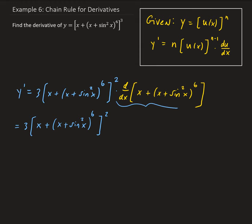So we need to take the derivative of this portion. We're going to take care of the inside. The derivative of x is just 1, and then we have to apply the general power rule for the next part, which is going to be 6 times (x plus sine squared x) all raised to the fifth power, times the derivative with respect to x of (x plus sine squared x).